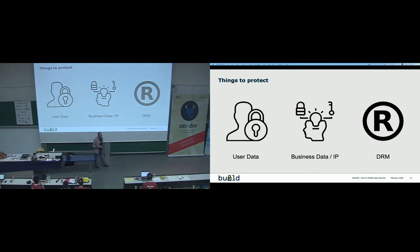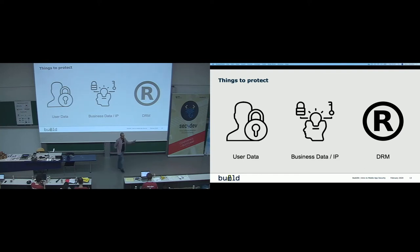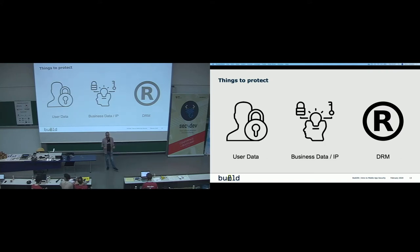The last slide of the introduction covers the main things to protect in a mobile application. First is obviously user data. There's another thing often overlooked, which is business data — for example, if you have an application with a premium model, you don't want someone to remove the checks for whether the user has paid. There's also company IP: if you have algorithms in your application that you've spent time developing, you don't want a hacker to reverse and steal them. And finally, DRM — if you are Netflix streaming data to your end user's device, you don't want users to just take the video and put it somewhere else.